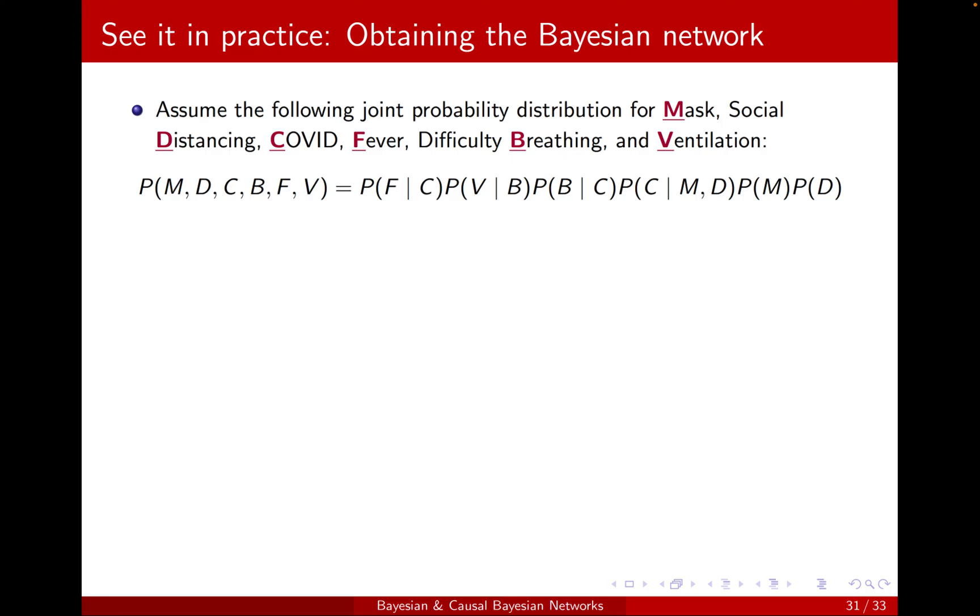Recall the COVID example with 12 variables. Here, for simplicity, we're only considering mass, social distancing, COVID, fever, difficulty breathing, and ventilation.